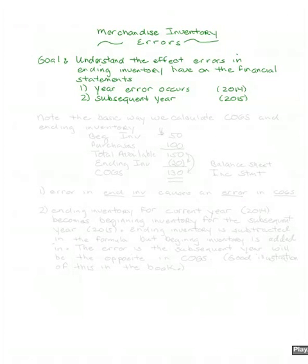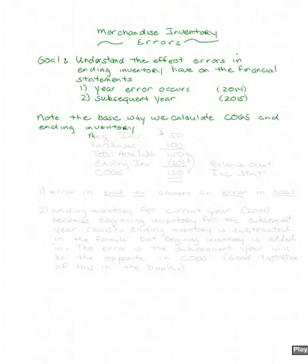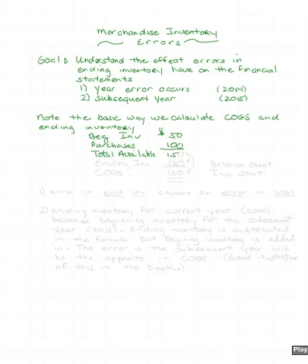We need to begin our discussion by reminding ourselves that we calculate cost of goods sold and ending inventory. Remember that we start with beginning inventory and add purchases for the entire period. Those two together give us our total inventory available for sale for the period. Then we split that — in this case ending inventory is $20 and cost of goods sold is $30.